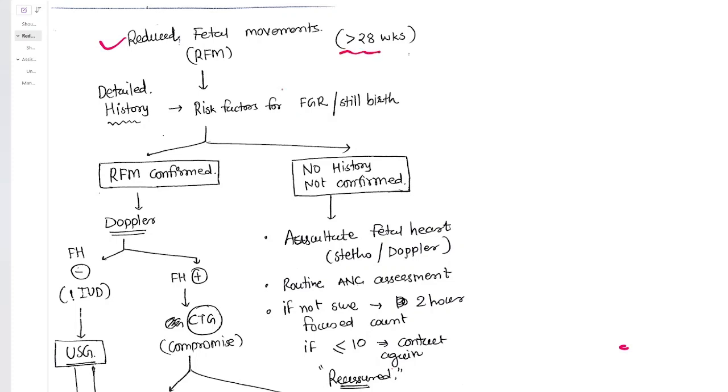In reduced fetal movements after 28 weeks, the most important thing here is to take history. Many gynecologists and students appearing for vivas forget to mention this very particularly. They do not put pressure or weightage on detailed history, but this is the most important part. This will decide the further management. It is important that you take a full history from the patient: how many kicks you are feeling, since how long you are not feeling well, since how long you are thinking that you have reduced fetal movements, and usually how many times your baby kicks.